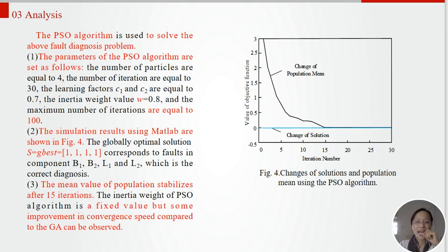The PSO algorithm is used to solve the above fault diagnosis problem. The parameters of the PSO algorithm are set as follows. The simulation results using MATLAB are shown in Figure 4. The global optimal solution S equal to G_best [1,1,1,1] corresponds to faults in components buses 1, buses 2, line 1, and line 2, which is the correct diagnosis. The mean value of the population stabilized after 15 iterations. The inertial weight of the PSO algorithm is a fixed value, but some improvements in convergence speed compared to the GA can be observed.